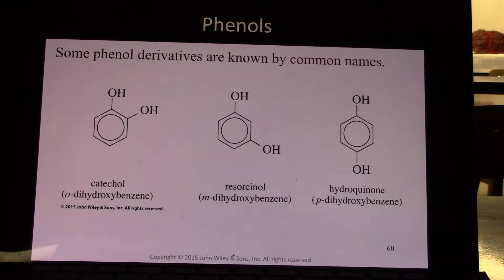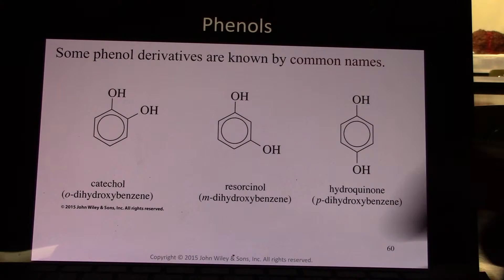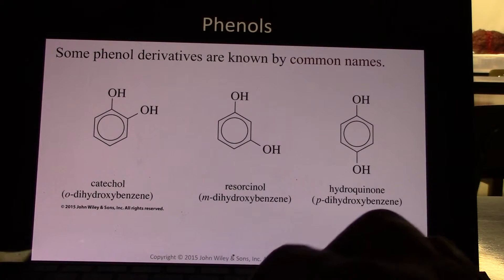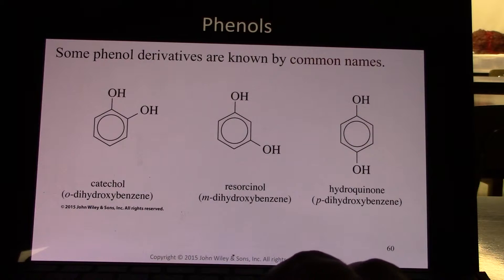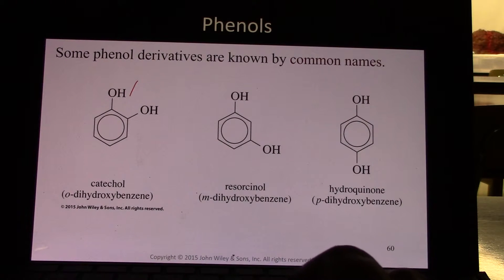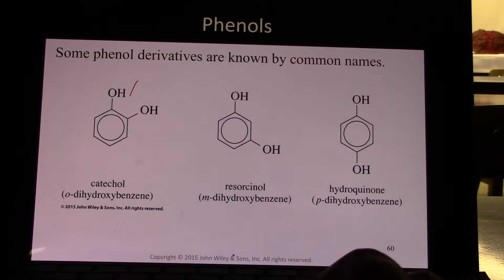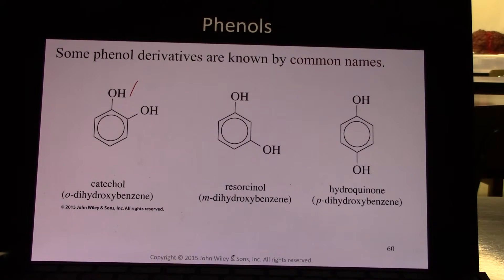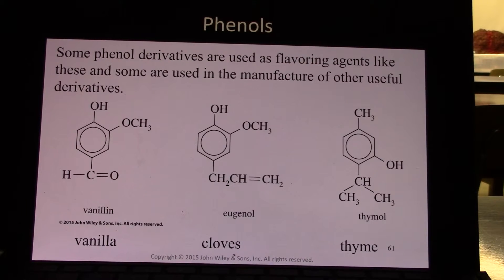Some phenol derivatives are known by common names. So 1,2- or 2-hydroxyphenol is catechol, or we can call it ortho-dihydroxybenzene, because the two OHs are ortho to each other. Meta-dihydroxybenzene is resorcinol. And para-dihydroxybenzene is hydroquinone. Those common names are used, and so we will use them in class.